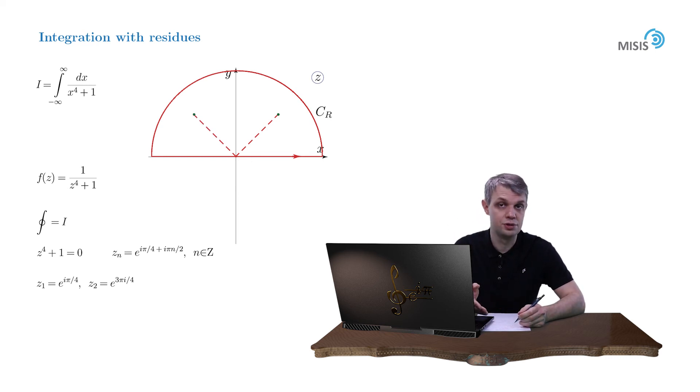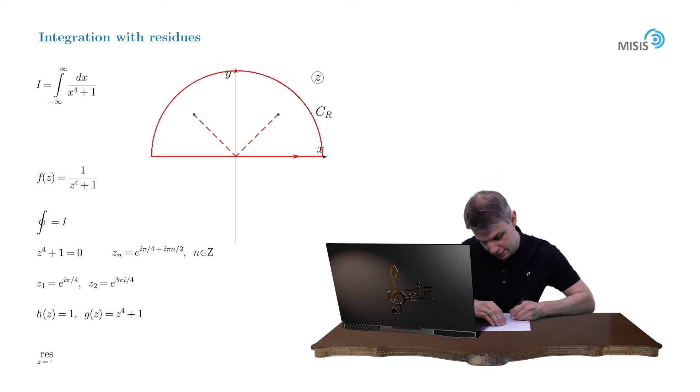This way, our integral is equal to 2πi times the sum of the residues at these poles. To compute the residues themselves, let's again use this shortcut formula for simple poles. Our function can be represented as the ratio of two elementary functions h of z, which is equal to 1, and g of z, which is equal to z raised to the power of 4 plus 1. As a result, the general formula for the residue is 1 over 4z0 cubed, where z0 is the position of the corresponding pole.